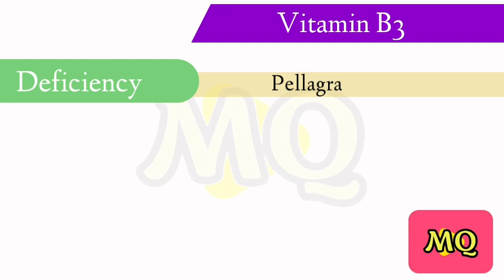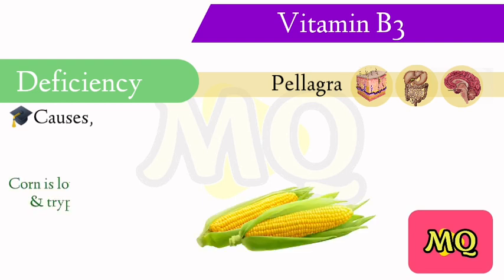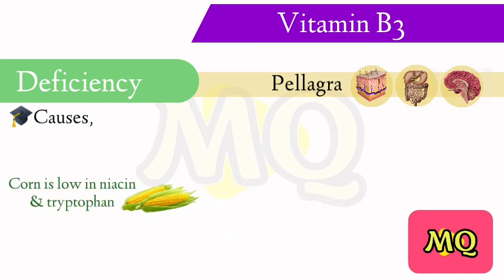Deficiency of niacin results in pellagra, a disease involving the skin, gastrointestinal tract, and central nervous system. Corn is low in both niacin and tryptophan; therefore, corn-based diets can cause pellagra.